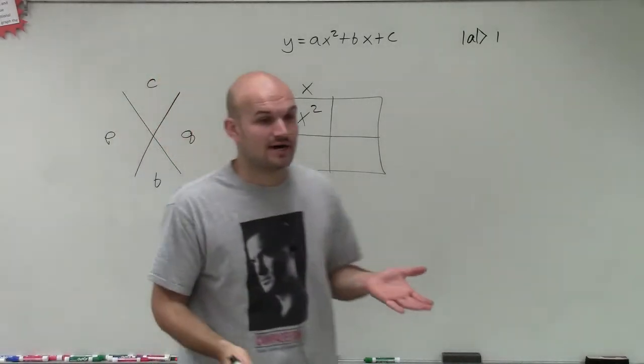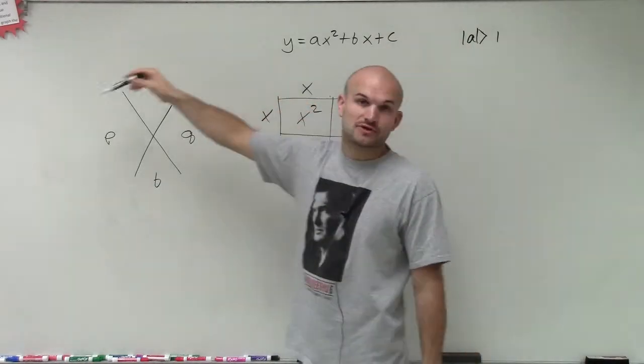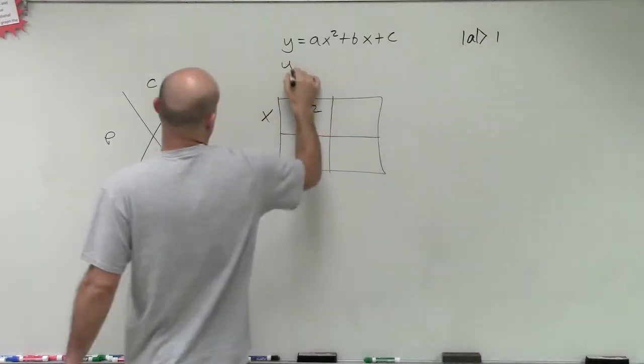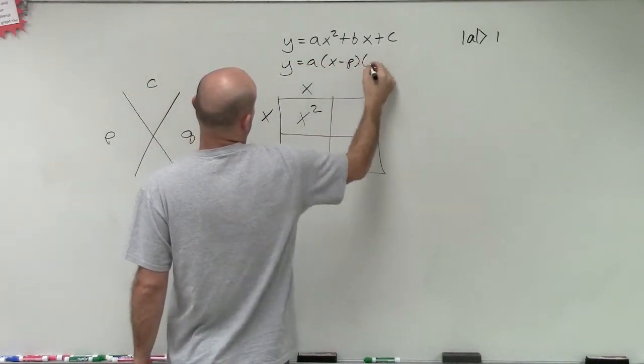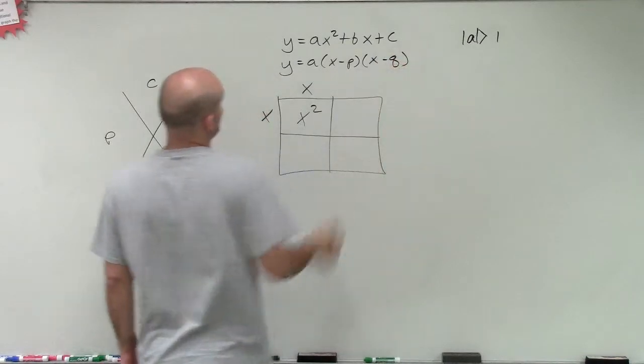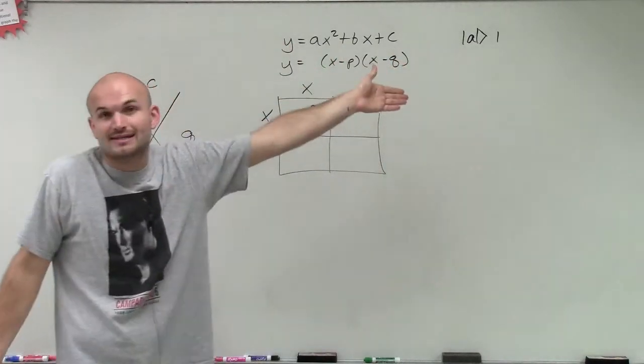So all we had to do was figure out what were the two numbers that multiplied to give us c, added to give us b, and then those are going to be our two factors. If you remember, we could write it in our factored form. And we could easily write it in factored form. And since a was 1, we didn't even have to write it, and then we already had something factored.